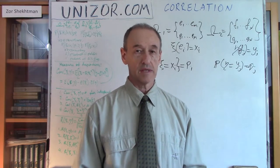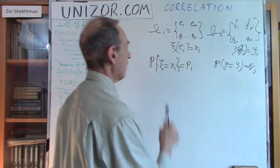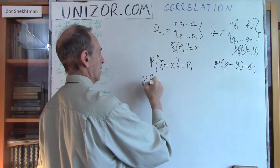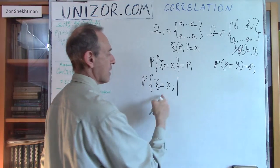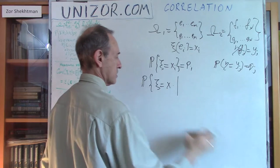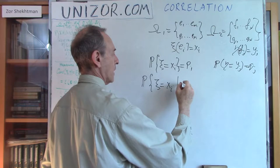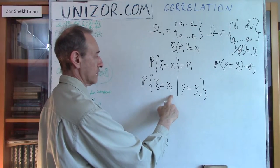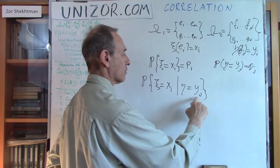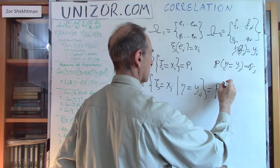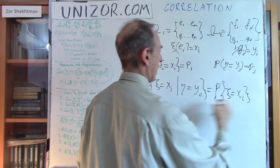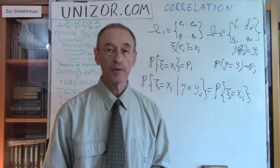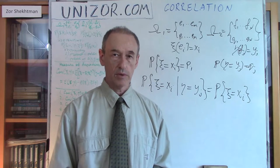Let's think about their independence. What does it mean that they are independent of each other? If they are independent, it means that the conditional probability of XI to take some value XI_i, under the condition that ETA has already taken the value YJ, is supposed to be equal to the unconditional probability. If this is true for any elementary events — for any values of XI and ETA — then we are talking about independent variables XI and ETA.